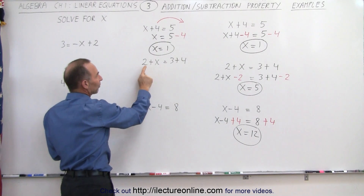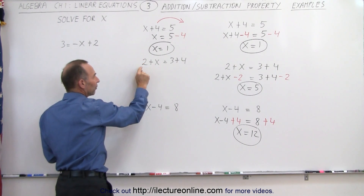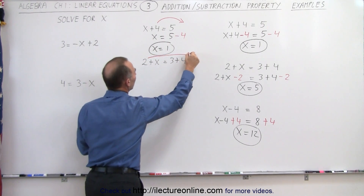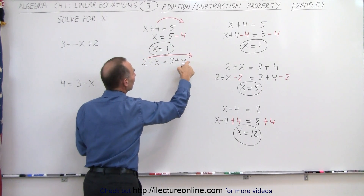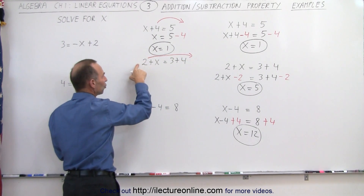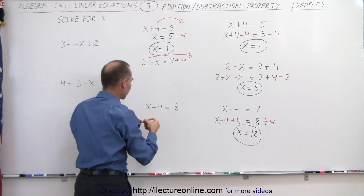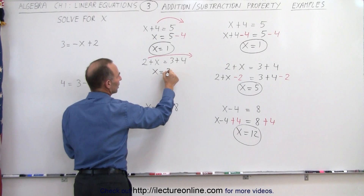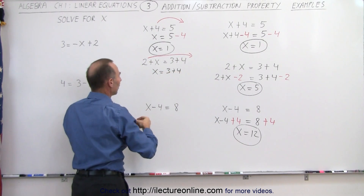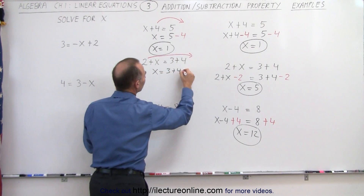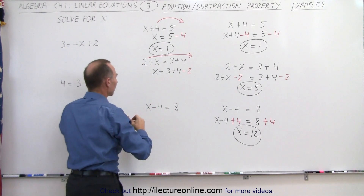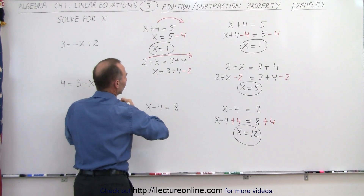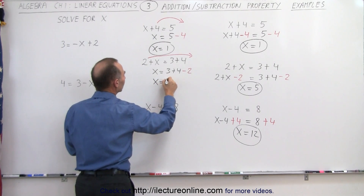We do the same over here — we have a plus 2 on the left side, we want to get rid of it, so we're going to move it to the right side. Whenever we move something across the equal sign, the sign changes. It was a plus 2, so it will become a negative 2 on the right side. This becomes x is equal to 3 plus 4, now we get minus 2 instead of plus 2. We combine those and get x is equal to 3 plus 4 minus 2, or x is equal to 5.